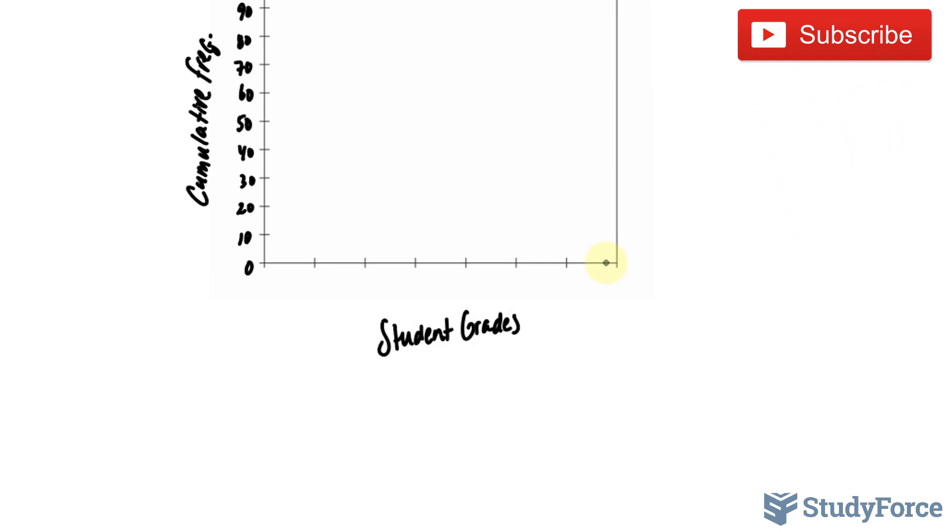Along here, I'll place the class limits. So we have 56, 62, 68, 74, 80, 86, 92, and 98.